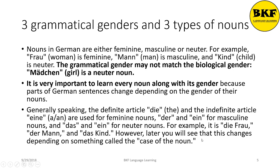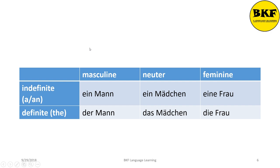However, later you will see that this changes depending on something called the case of the noun. A useful table for you. A man is ein Mann. A girl is ein Mädchen. A woman is eine Frau. And for definite articles, it is der Mann, das Mädchen, and die Frau.